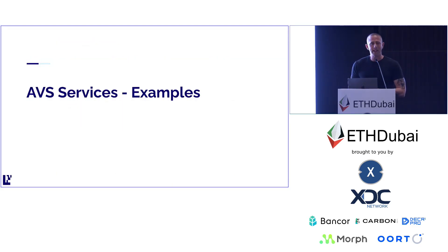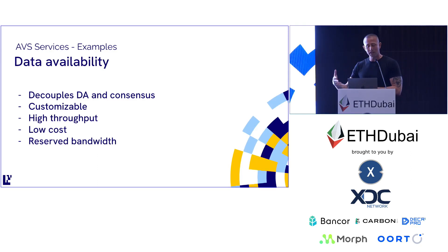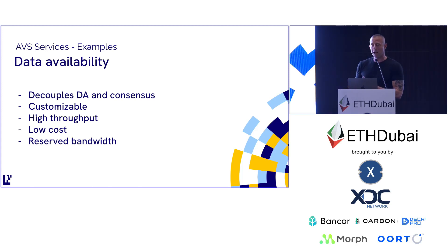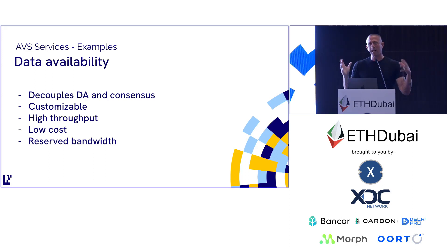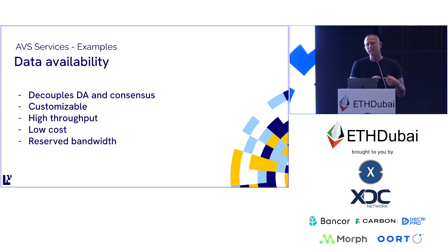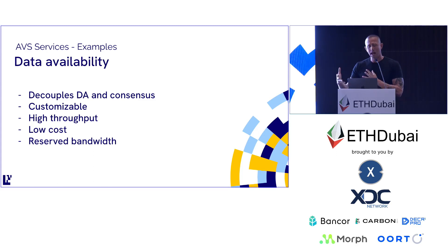Let's look at some examples that exist today. EigenDA is the first one — very high throughput, very low cost. One thing a lot of people using EigenDA like is the idea of reserved bandwidth. You can say: regardless of how crazy the network gets or how much usage spikes, I need this much bandwidth, and no matter what happens I still get it. You get away from some of the craziness we've seen with blob storage issues.